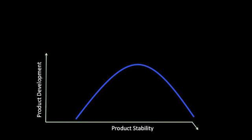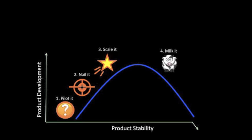The basic stages of the product life cycle are pilot it, nail it, scale it, milk it, or at any time, kill it.